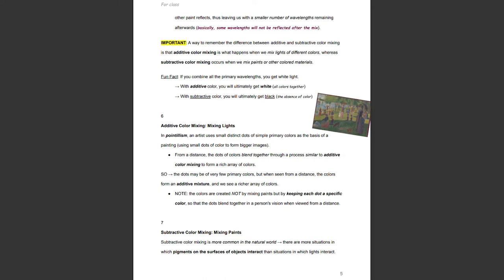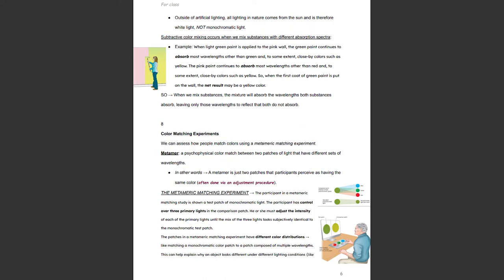Subtractive color mixing: mixing paints. Subtractive color mixing is more common in the natural world — there are more situations in which pigments on the surfaces of objects interact than situations in which lights interact. Outside of artificial lighting, all lighting in nature comes from the sun and is therefore white light, not monochromatic. Subtractive color mixing occurs when we mix substances with different absorption spectra. For example, when green paint is applied to a pink wall, the green paint continues to absorb most wavelengths other than green, and the pink paint continues to absorb most wavelengths other than red.